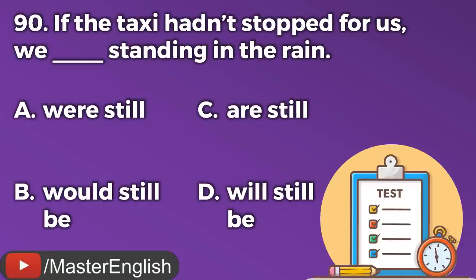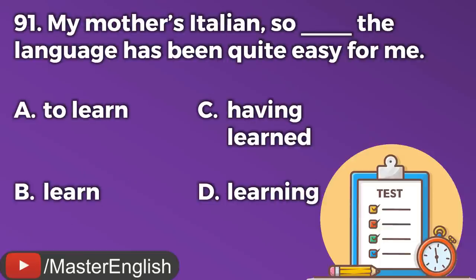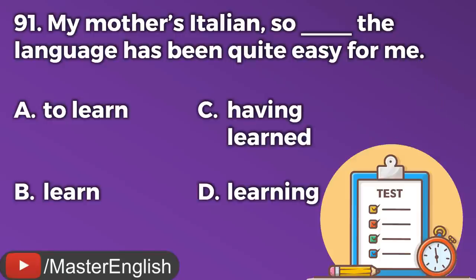Question number ninety. If the taxi hadn't stopped for us, we ___ still be standing in the rain. A: Were still. B: Would still be. C: Are still. D: Will still be. The correct answer is B: Would still be. We would still be standing in the rain. Question number ninety-one. My mother's Italian, so ___ the language has been quite easy for me. A: To learn. B: Learn. C: Having learned. D: Learning. The correct answer is D: Learning. Learning the language has been quite easy for me.